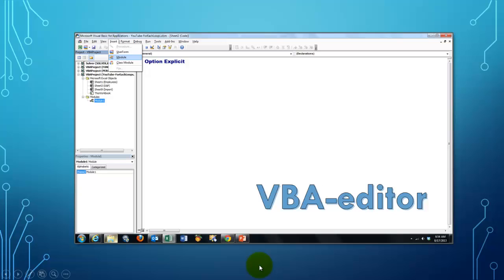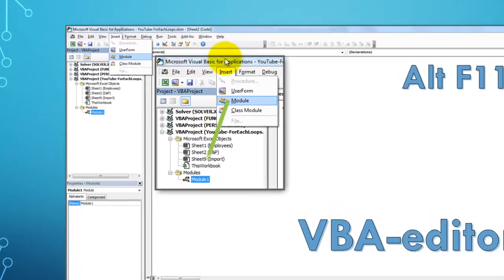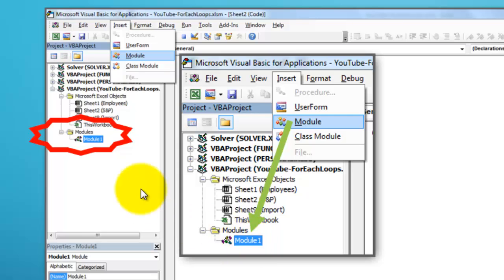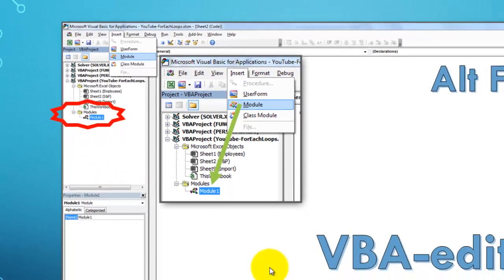You do all of this in the VBA editor which you open with Alt F11. And then you have to make sure that you will add through the insert menu a module. In the module you put your subroutines. They will be added to module 1.